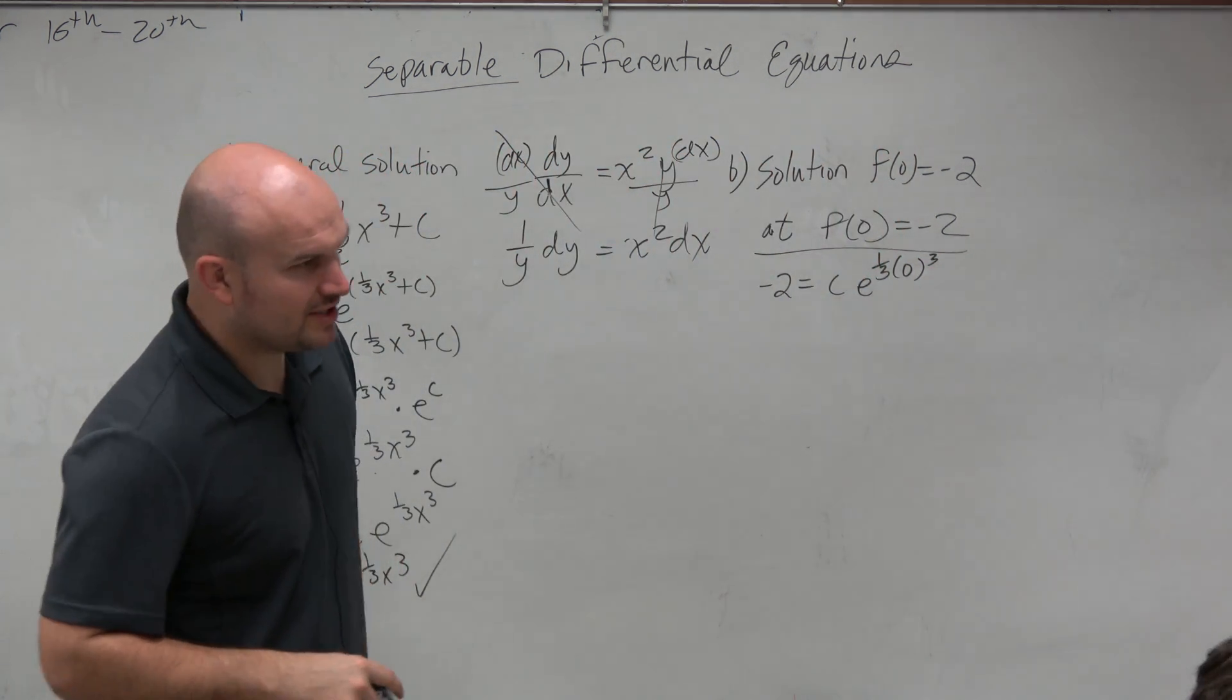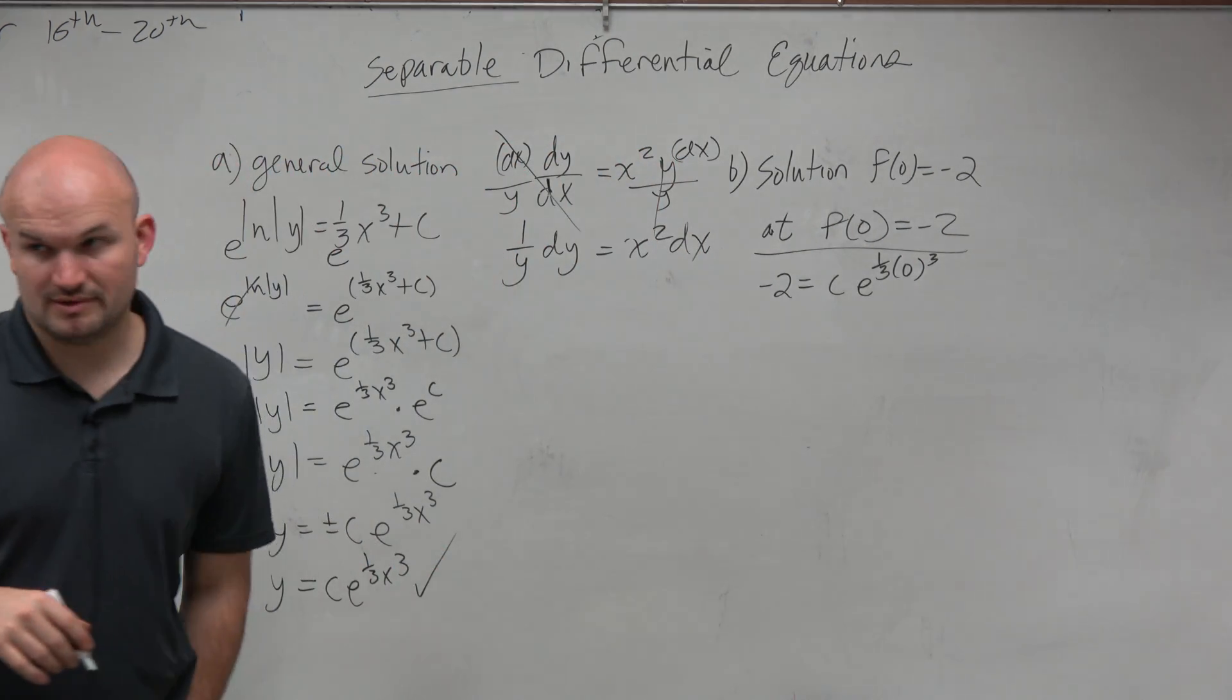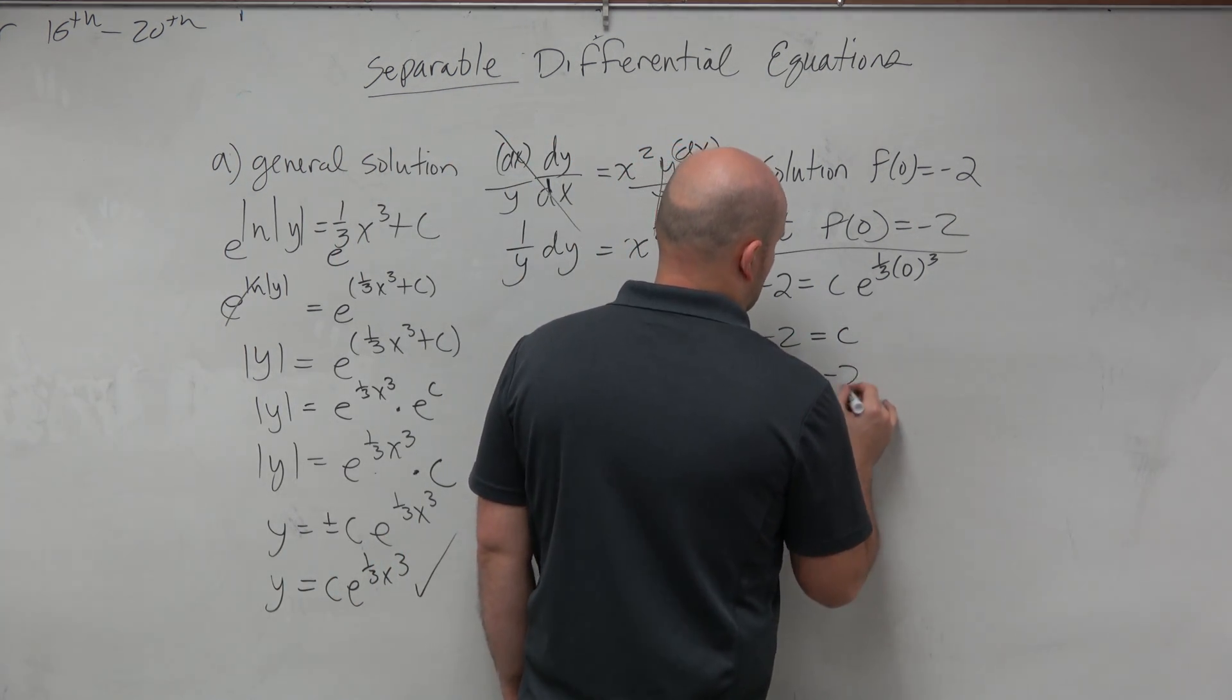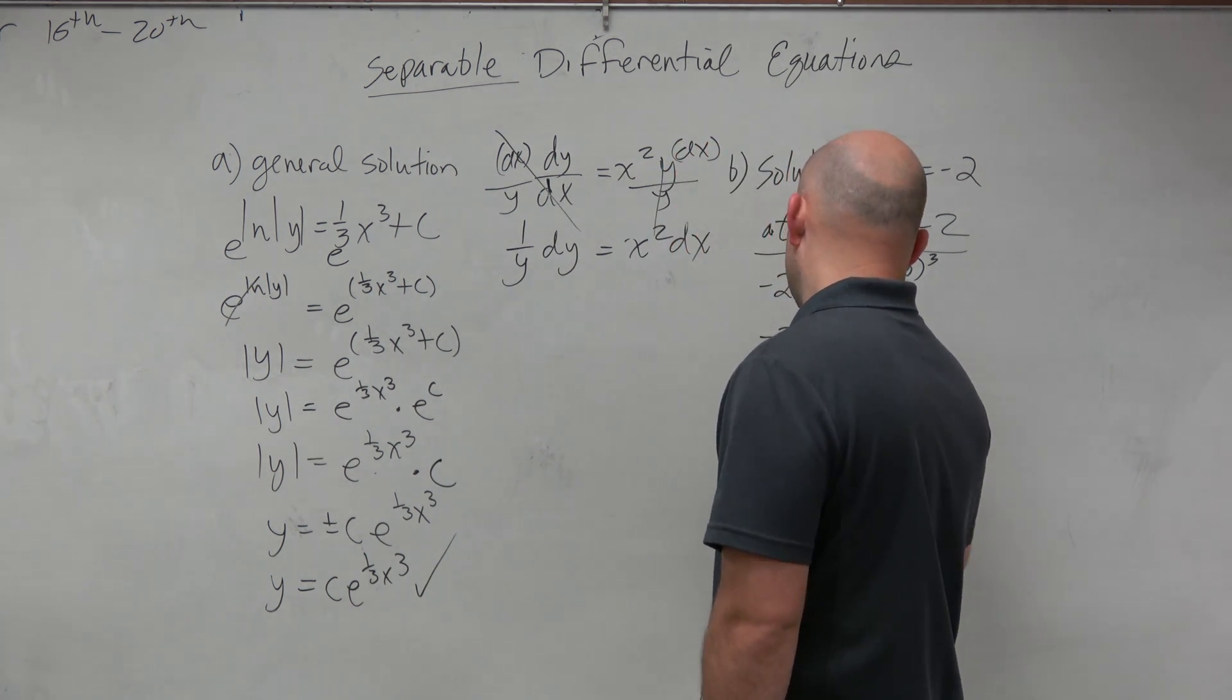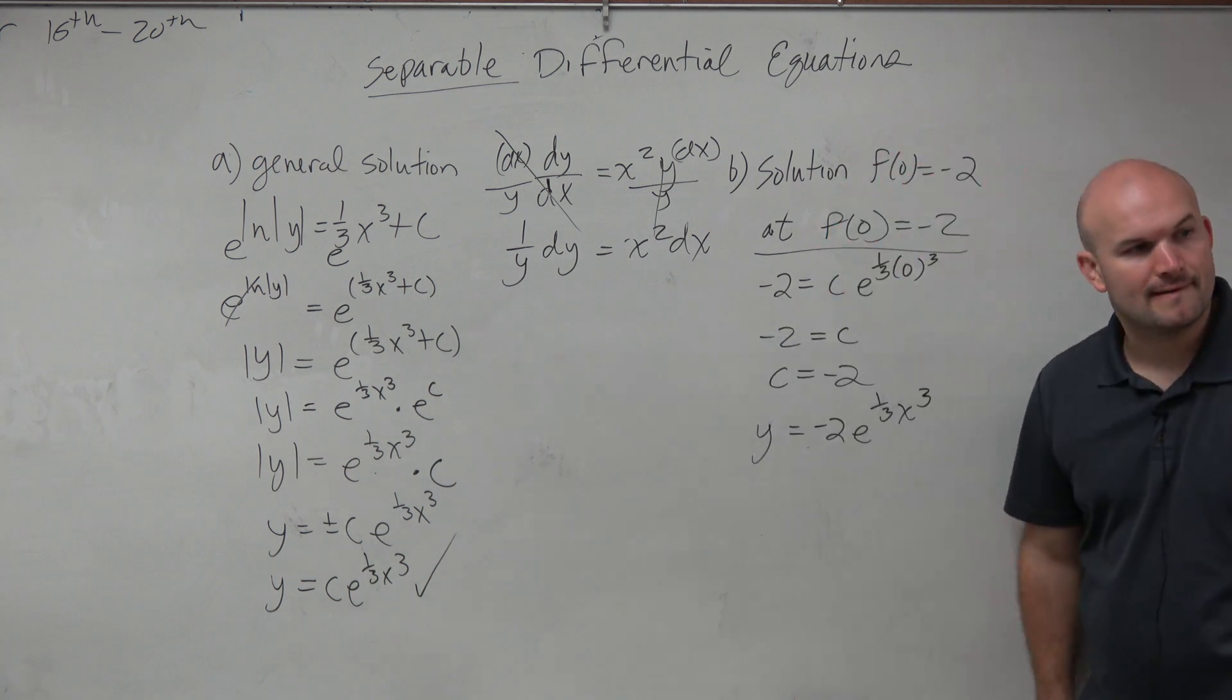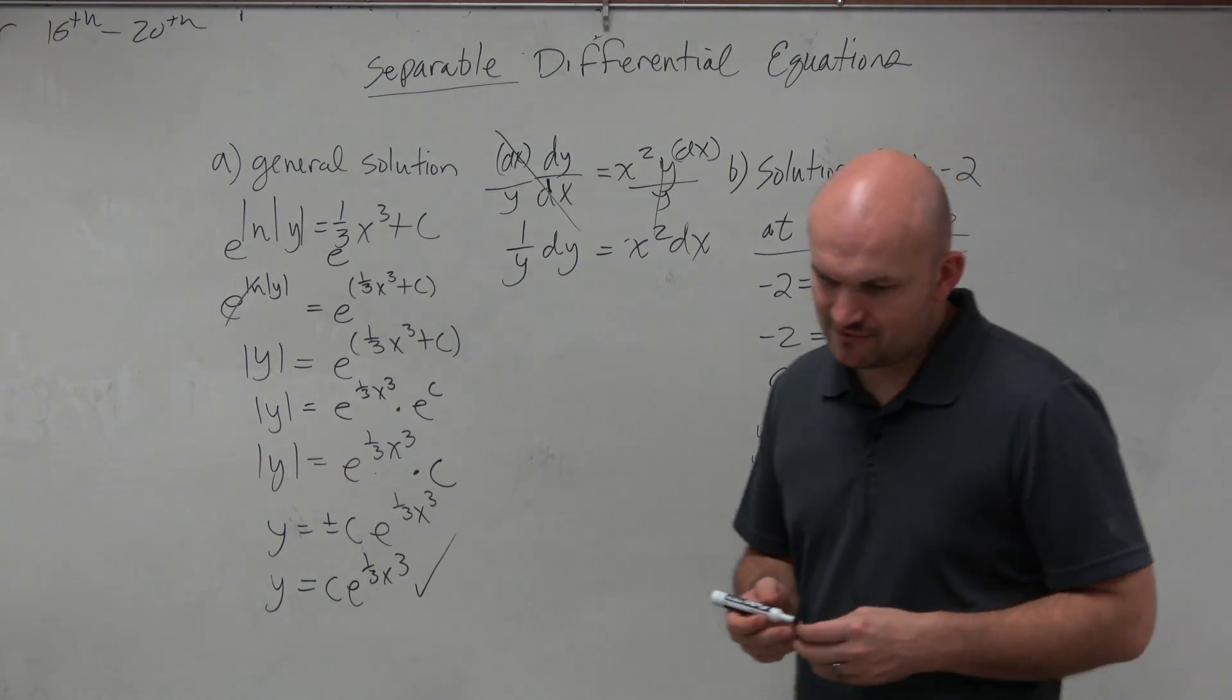Well, 0 cubed times 1/3 is just going to be 0. And e to the 0 is 1. So now I can just plug that back in. y equals negative 2 e to the 1/3 x cubed. That's it. That's all I got for you.